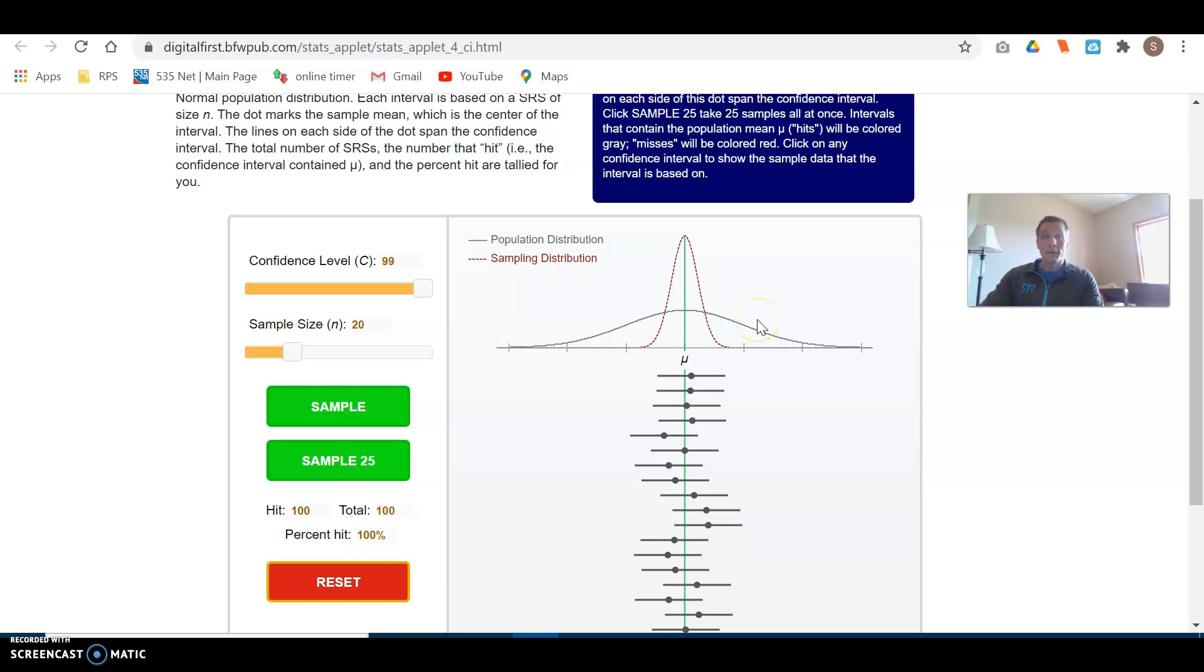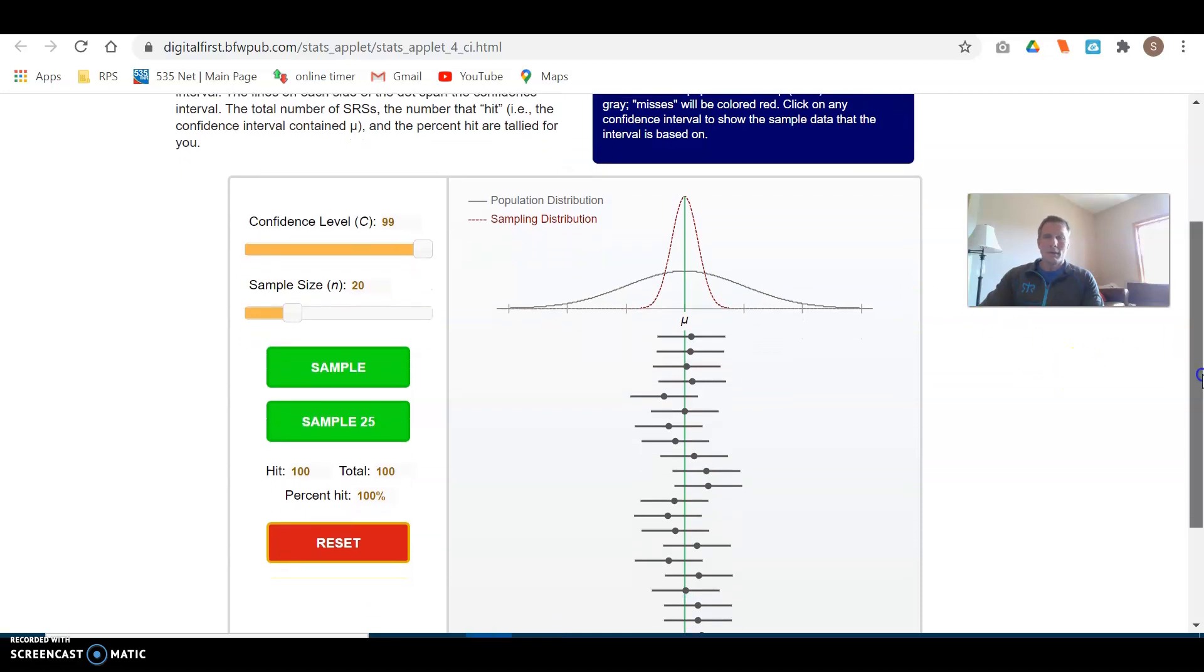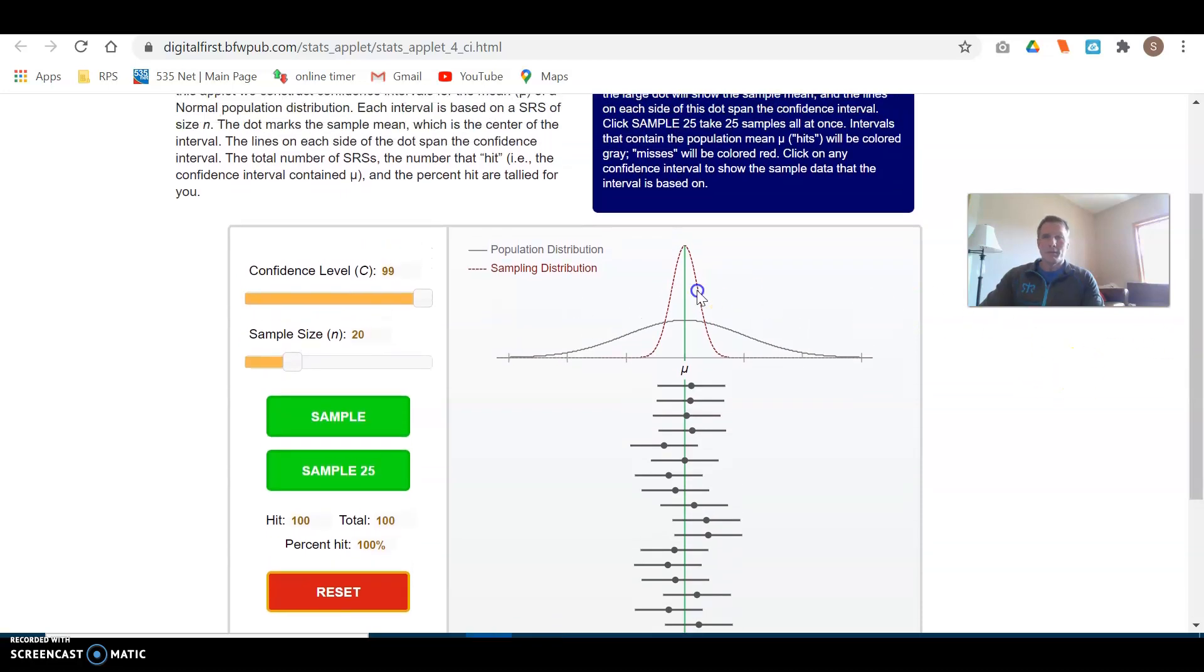Hey, the last video timed out on me a little bit there, but I was trying to say that if you make the confidence level less, like 80%, you get a smaller confidence interval with a smaller margin of error.